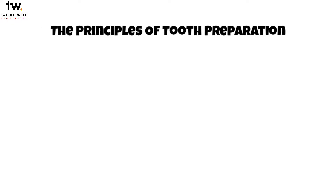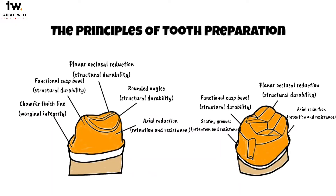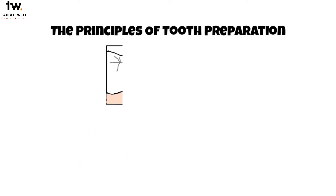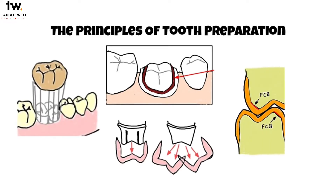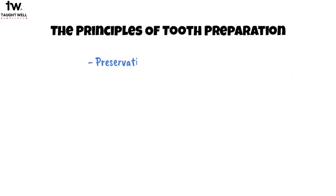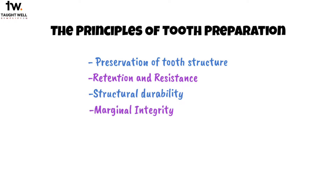Today, we will be learning about the principles of tooth preparation. Before we go into the details of how tooth preparation is done, it is necessary for us to know certain characteristics and features that are incorporated into a preparation. For proper tooth preparation, there are some basic principles: preservation of tooth structure, retention and resistance, structural durability, marginal integrity, and preservation of periodontium. Let's discuss them one by one.